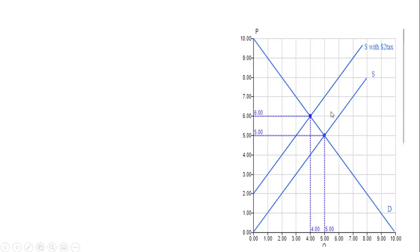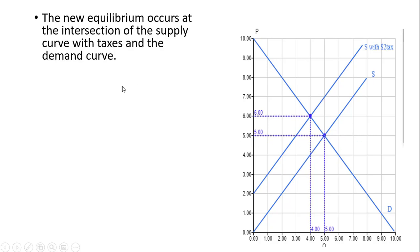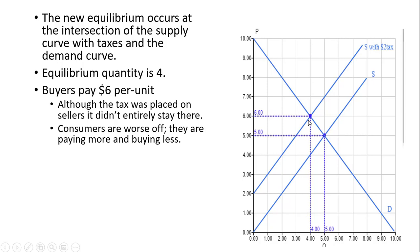Here's a look at it now with the demand curve placed in the diagram. We're still shifting up the supply curve by $2. The new equilibrium occurs at the intersection of the supply curve with taxes and the demand curve. The equilibrium quantity at this equilibrium is 4 units, and buyers are going to be paying $6 per unit — at one time they only paid $5. Although the tax was placed on sellers, sellers were able to pass some of it on to consumers in the form of higher prices. Consumers are worse off: they're paying more and buying less.